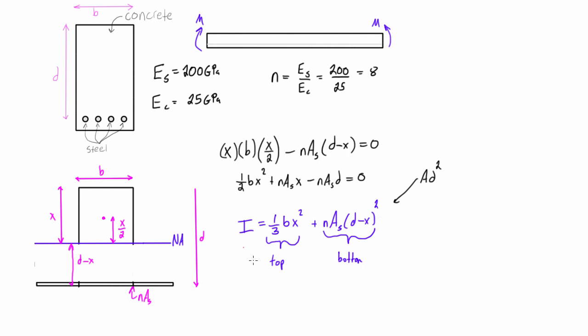From there, we basically just take that value and plug it into our stress equations. Usually we'll be looking for our max stress in the concrete, which will just be MC over I. M is our applied moment. C in this case is the distance to the maximum distance to the most extreme fibers, which is equal to x for the concrete. And I, moment of inertia, we would have calculated it in this step.